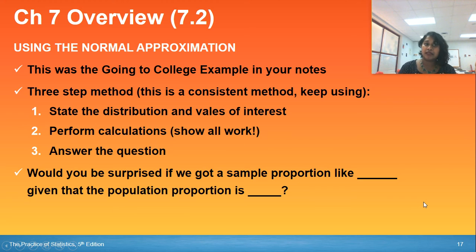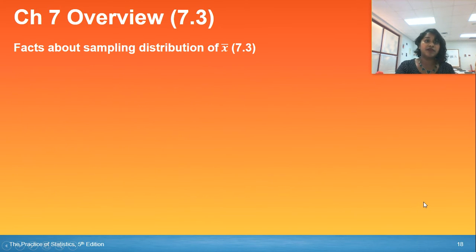When you're thinking about chapter 7.2, ask yourself this question: Would you be surprised if we got a sample proportion like whatever your value was, given that the original population proportion is blah, blah, blah? So that's a good question to ask yourself every time you're thinking about chapter 7.2.